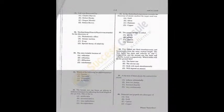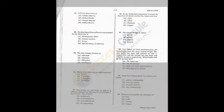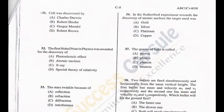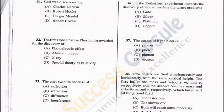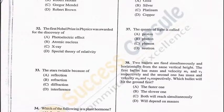Question 31: Cell was discovered by Robert Hooke — B is the correct answer. Question 32: The first Nobel Prize in Physics was awarded in 1901 for the invention of X-rays to Wilhelm Conrad Röntgen — C is the correct answer. Question 33: Stars twinkle because of atmospheric refraction of starlight — B is the answer.